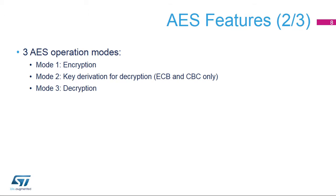The AES features three modes of operation. Mode 1: plaintext encryption. Mode 2: electronic codebook (ECB) or cipher block chaining (CBC) decryption key derivation — it must be used prior to selecting Mode 3 with ECB or CBC chaining modes. Key derivation derives a new key based on the value stored in the AES key registers before enabling the AES accelerator. Mode 3: ciphertext decryption.